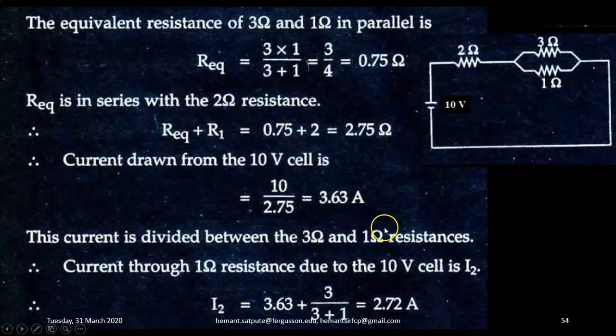Now this current is divided between 3 ohm and 1 ohm resistance. This is the total current supplied by this voltage source 10 volt. This current will get divided into this parallel combination. So now current through 1 ohm resistance due to 10 volt cell will be I2 and then I2 will be equal to 3.63 into 3 upon 3 plus 1 that is 2.72 ampere.